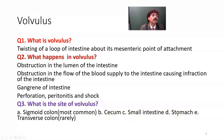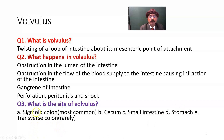The stomach, if it has no ligamentous support, may also be twisted. The transverse colon may rarely be twisted and lead to volvulus. Sigmoid colon is the most common. Small intestinal volvulus is common in infants.